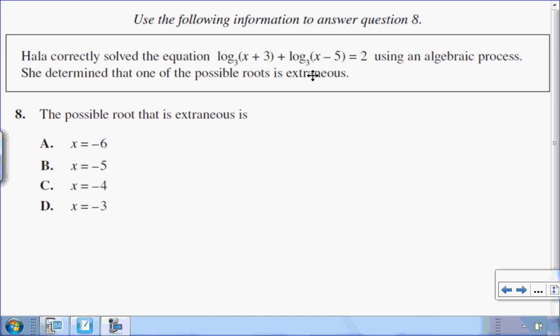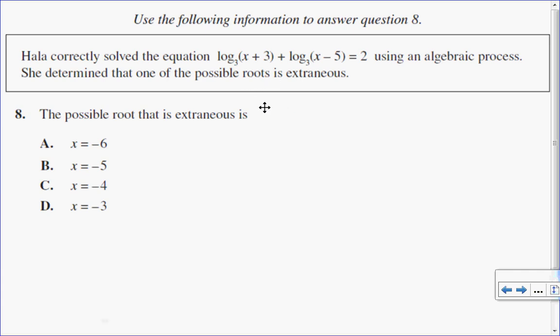So let's get started. When I'm doing logs, I always like to look at my restrictions. So I have a log with an argument of x plus 3, and I know that has to be greater than 0. So the restriction for that log is that x is greater than negative 3.